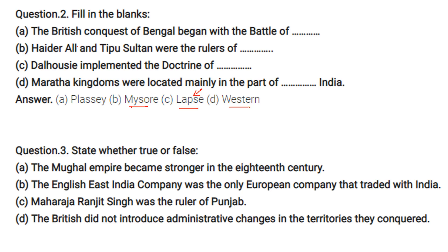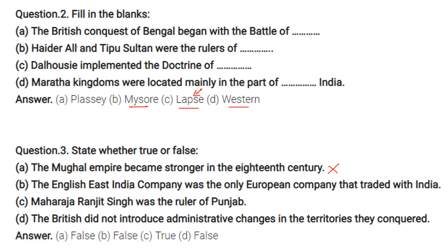True or False: The Mughal Empire became stronger in the 18th century — this is false, because in the 18th century the last recognized emperor was Aurangzeb; after that, all were just namesake rulers. The English East India Company was the only European company that traded with India — this is also wrong. It was the only English company, not the only European company.